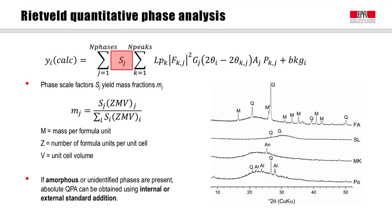The scale factors obtained in the refinement scale linearly with the phase volume fraction. If you assume that the sum of crystalline phases is 100%, then the phase weight fraction can be calculated by normalizing the product of the scale factor with Z, the number of formula units per unit cell, M, the mass per formula unit, and V, the unit cell volume, over the sum of these products over all crystalline phases.